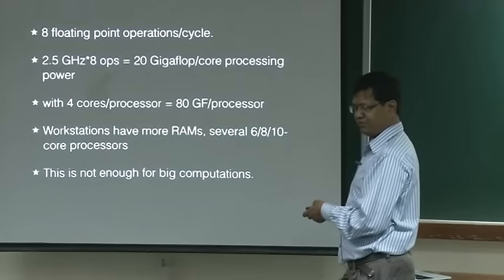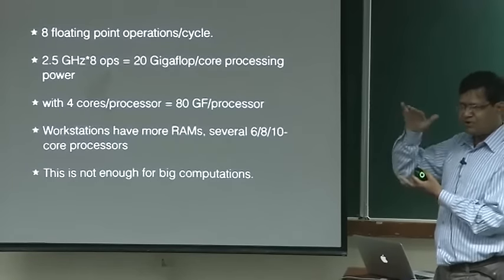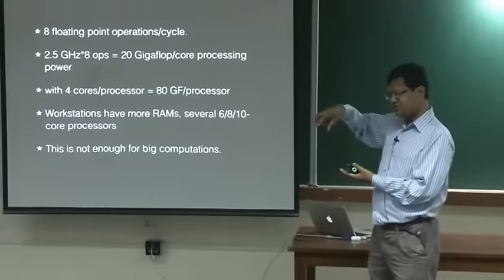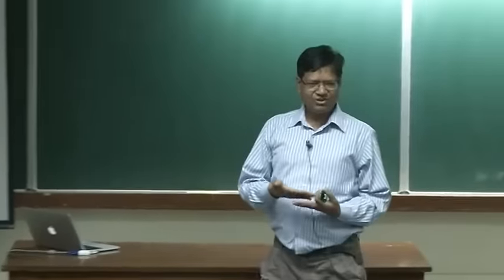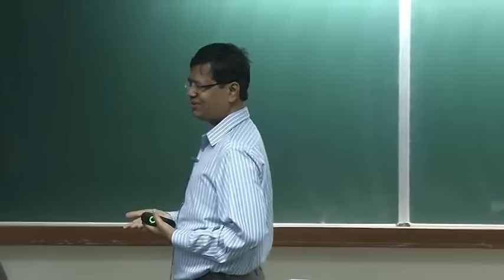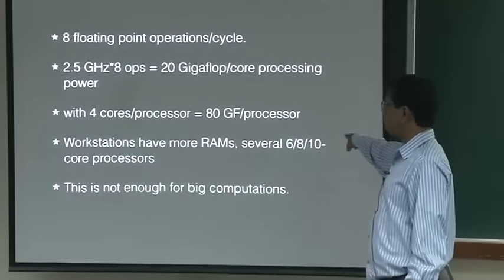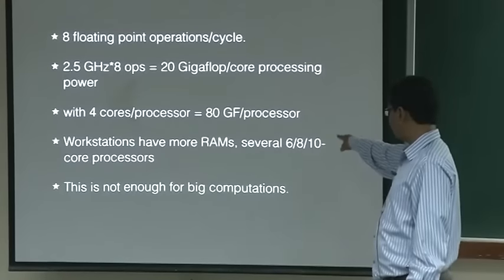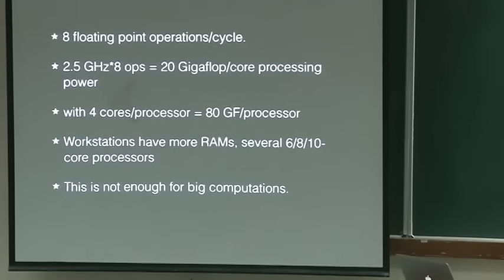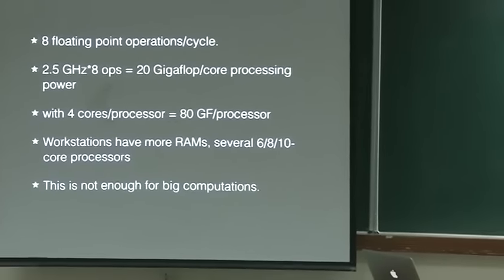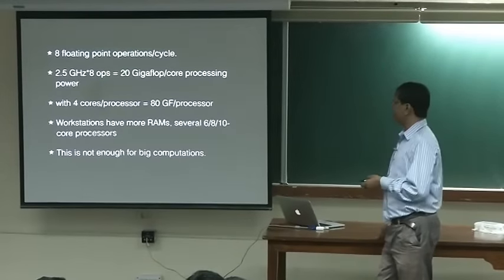You can buy workstations which can do more than a desktop. A workstation will have a better processor — you put 8 CPUs. In laptops you cannot put more than 2 because it will heat up and the motherboard will cost more. If you need more, you need to pay more. A workstation can go up to 15 cores per CPU. But this is not enough for big computations — if I want to do weather prediction or simulate DNA, this would not be enough.